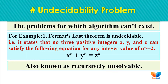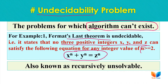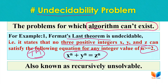Undecidable problems are the problems for which an algorithm cannot exist — meaning we cannot find out the solution for these types of problems, so we call them undecidable problems. For example, Fermat's Last Theorem is proved undecidable because we cannot find three positive integers x, y, and z that satisfy the equation for all n greater than or equal to 2.